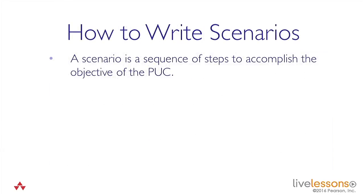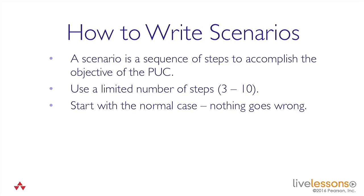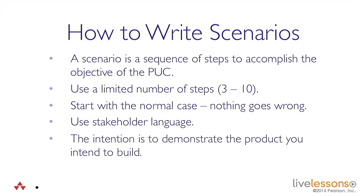So let's talk about how we write these scenarios. A scenario is just a sequence of steps that's going to accomplish the objective of the product use case. I'm suggesting you use a limited number of steps — somewhere between 3 and 10. If you've got 127 steps in your scenario, you're really writing lines of code and nobody's going to read it. Start with the normal case — where nothing goes wrong. Use the stakeholder's language, whatever their business language is. Include their terms so they recognize them. Your intention is to demonstrate the product you intend to build.